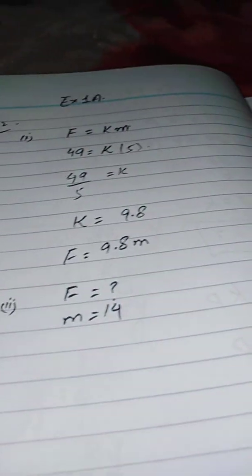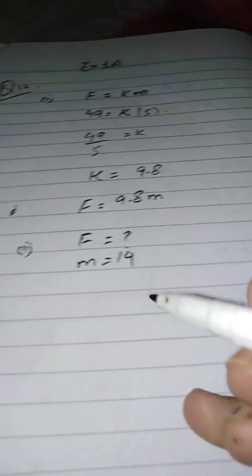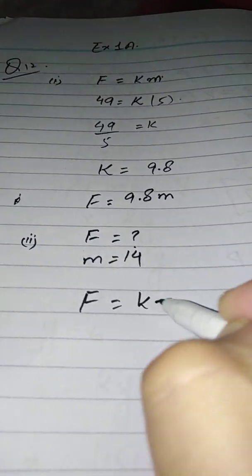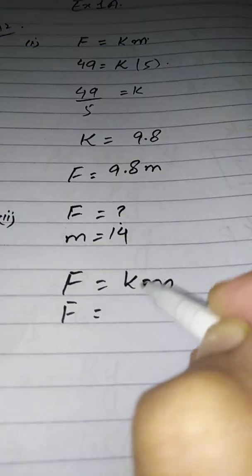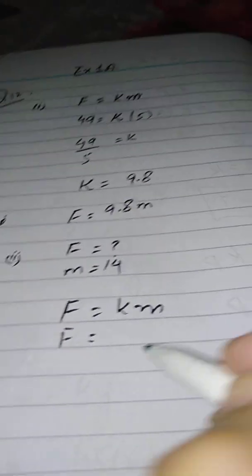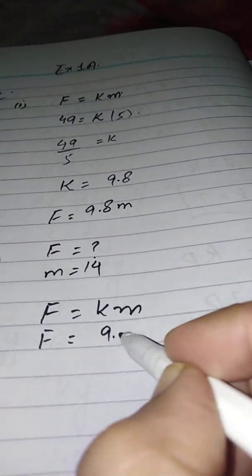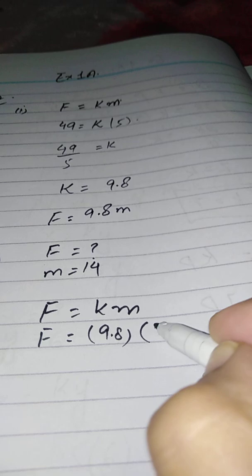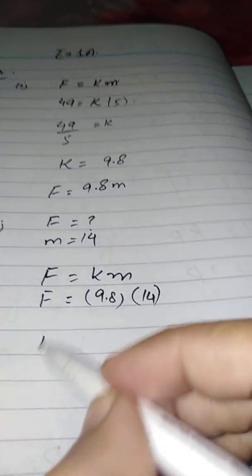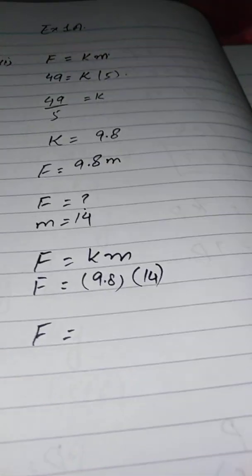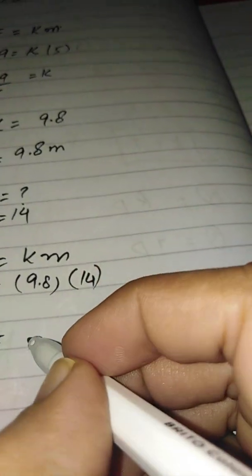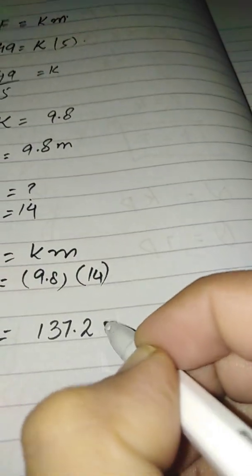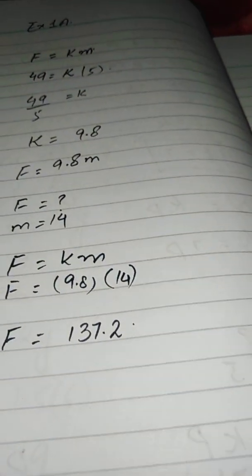Use the same equation F equals KM. You have to find force, so put in the values: K is 9.8 and M is 14. You will get the answer, which is 137.2.